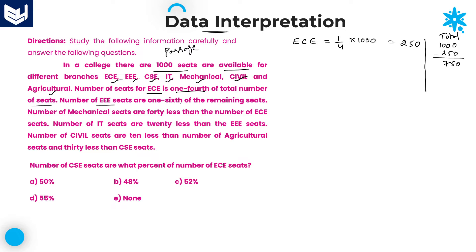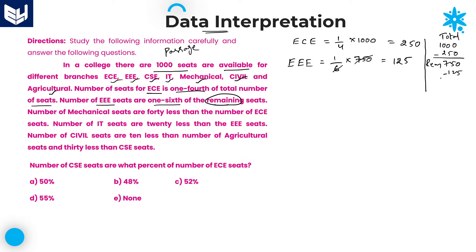Number of EEE seats are one sixth of the remaining seats. Some people will take one sixth of total, but he is telling one sixth of remaining. The remaining value is 750 after completion of ECE branch. One sixth of 750 is 125. Now 125 is completed for EEE.